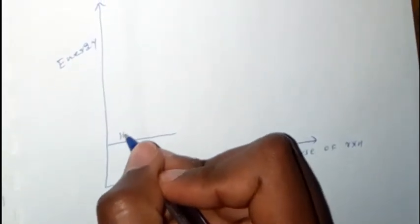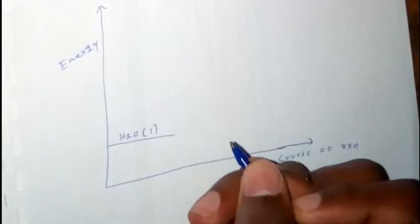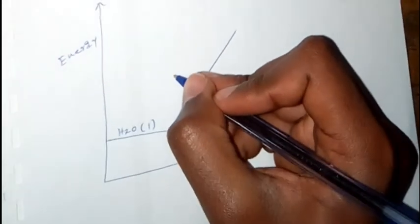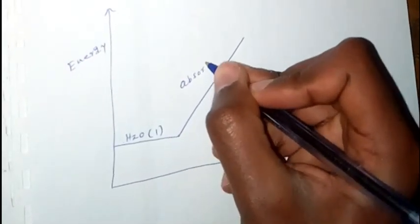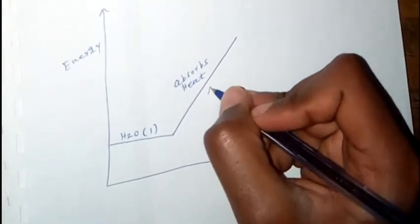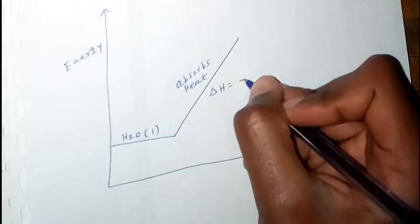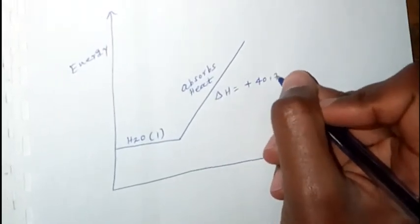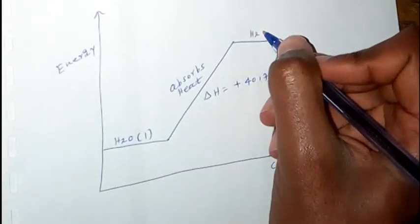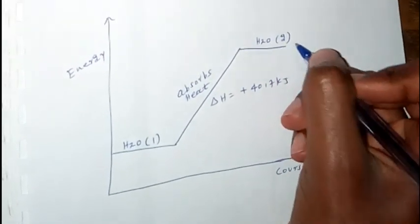Drawing the energy diagram: energy on y-axis, course of reaction on x-axis. Water liquid at lower level absorbs 47 kilojoules of heat energy to become water gas at higher level. The change in enthalpy is positive, 47 kilojoules, forming the product gas.